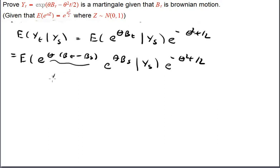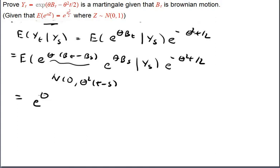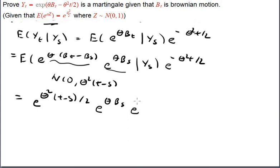The increment B(t) − B(s) has a normal distribution with mean 0 and variance θ²(t − s). From that, the expectation of e to the θ(B(t) − B(s)) equals e to the θ²(t − s) over 2. Since the increment is independent of Y(s), it can be brought outside and is treated as a constant.